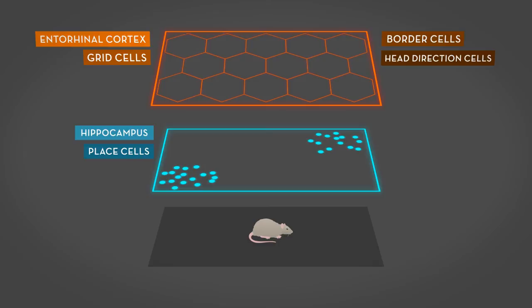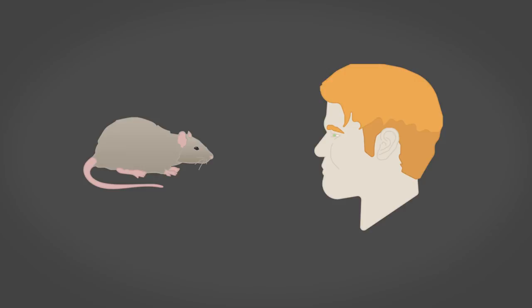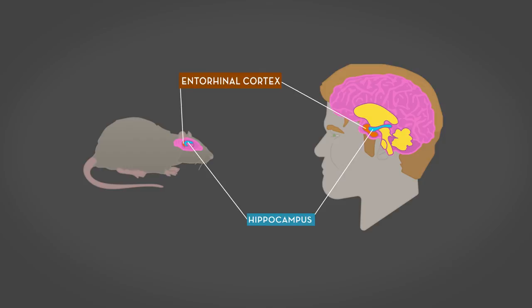The research done by O'Keefe and the Mosers has all been on mice and rats. So, the next question you might ask is, do these experiments allow us to draw the same conclusions for humans? A comparison of the brains of humans and rats and the chemical signals, electrical impulses and circuitries shows that they are astonishingly similar.